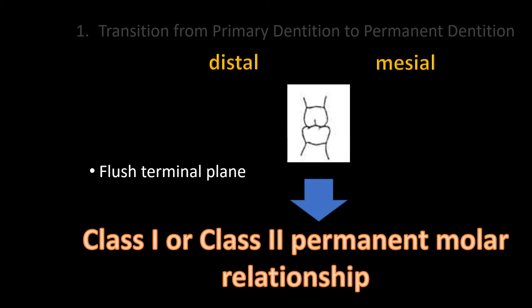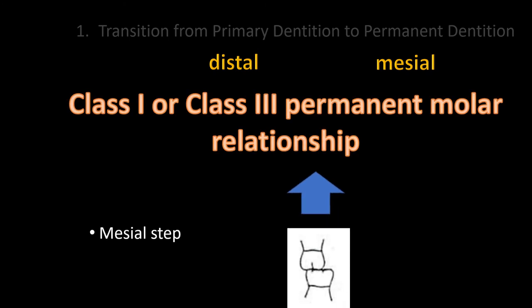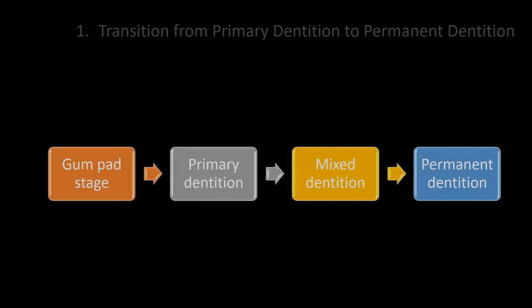The flush terminal plane relationship may result in class I or class II permanent molar relationships. Finally, the mesial step may result in class I or class III molar relationships. Here again is the chart representing the evolution of the occlusion.